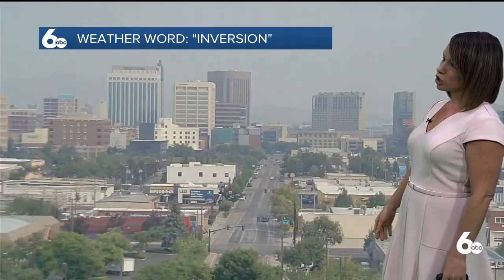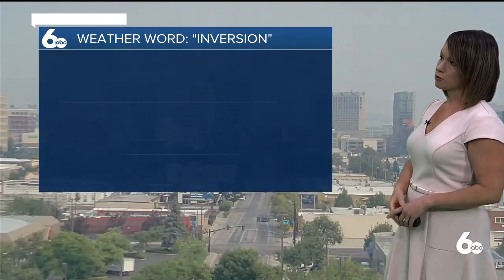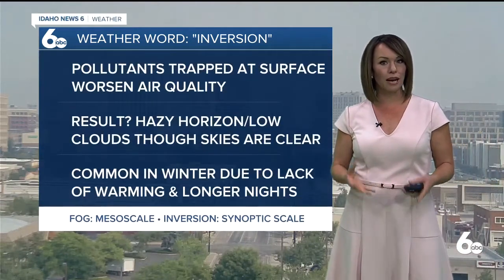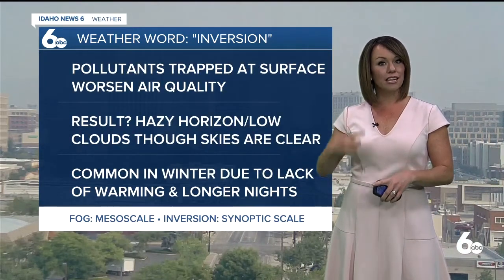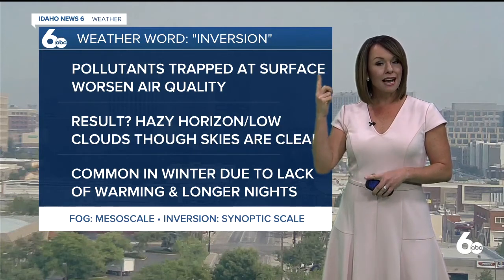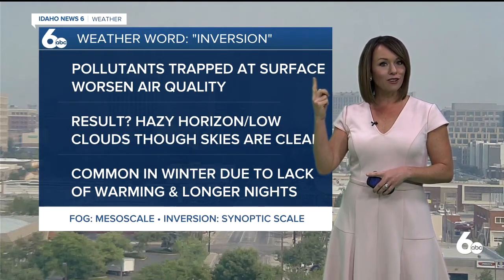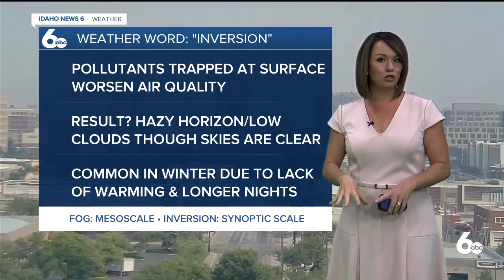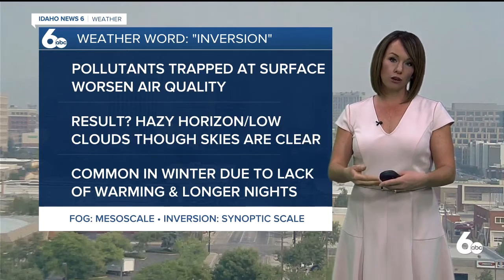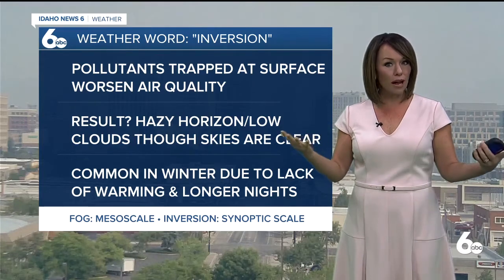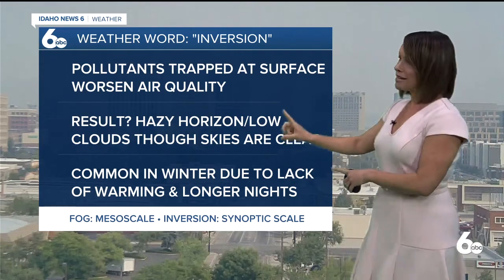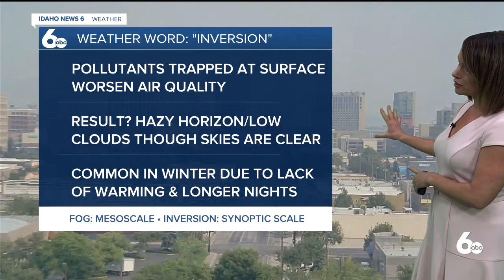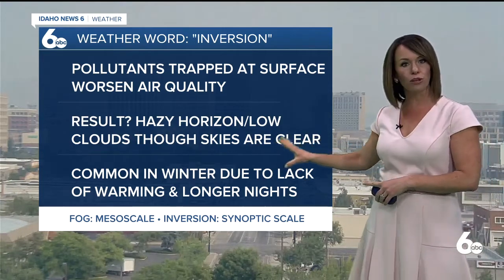You know what else it traps? Of course, those pollutants. So this is what we start looking like when we have a really strong inversion in play — looks like it's foggy, hazy, murky, even though skies are clear above that inversion layer. We get those pollutants trapped at the surface that start to worsen our air quality. That's why we currently have that air stagnation advisory in effect, because it might start looking like this out there. Air quality could get poorer and poorer.